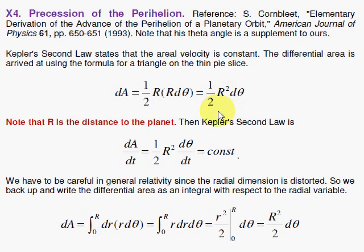But I have to be careful in general relativity because the r coordinate is distorted. So this is Kepler's second law in Newtonian physics where there's no distortion. The change in area with respect to time is a constant.